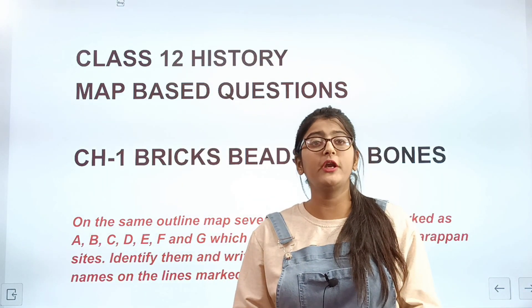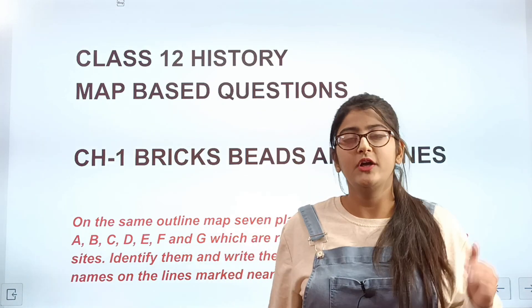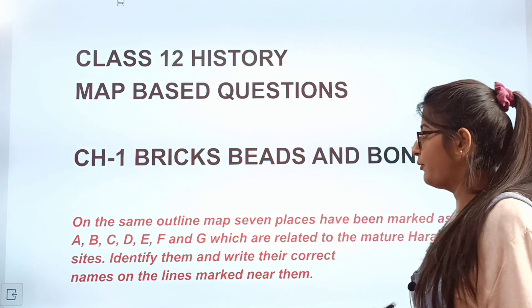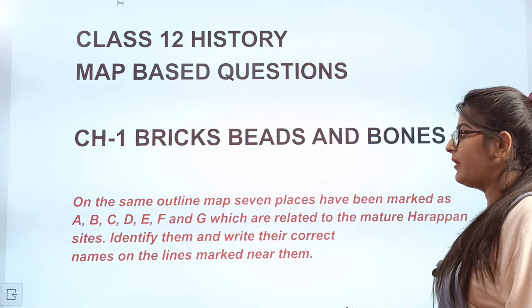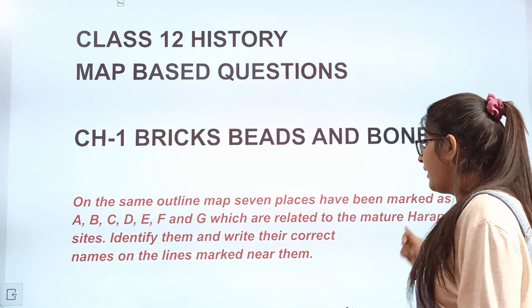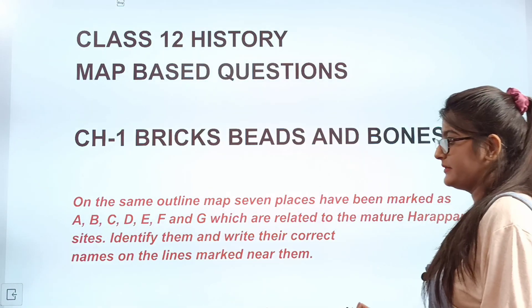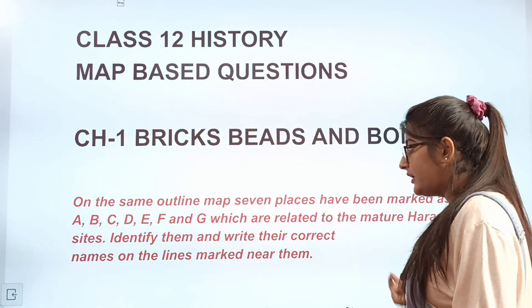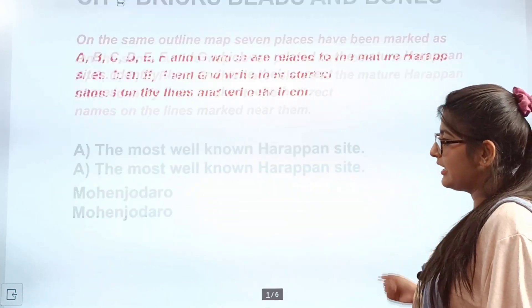Now let us revise our map questions for our Term 1 board exam. Let's see some map questions from the chapter Bricks, Beats, Bones. There are places marked as A, B, C, D, E, F, and G which are related to the mature Harappan sites. Identify them and write their correct names.